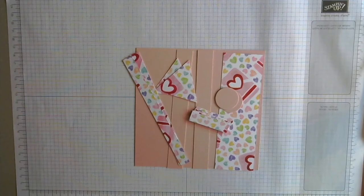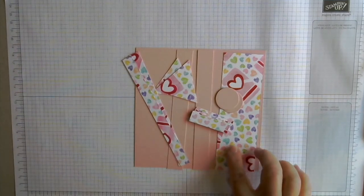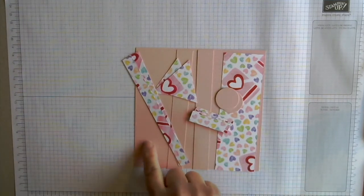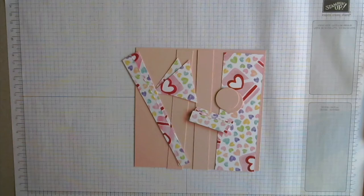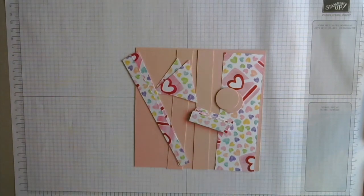The first thing that you want to do when you start making this little basket project is to choose your patterned paper, and then you're going to choose a coordinating cardstock to go with it. Now in a minute here I'll put up all the measurements. You're going to want to get everything cut first before you start putting anything together.